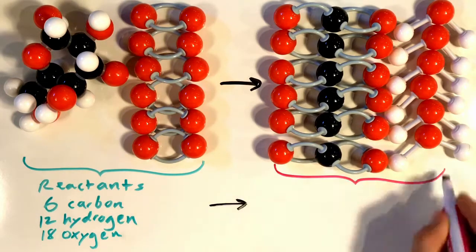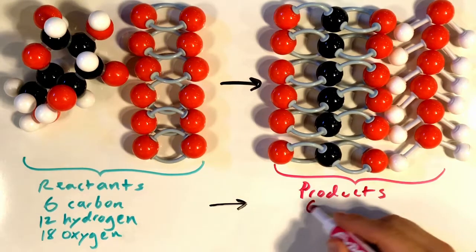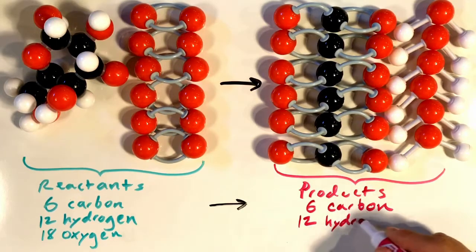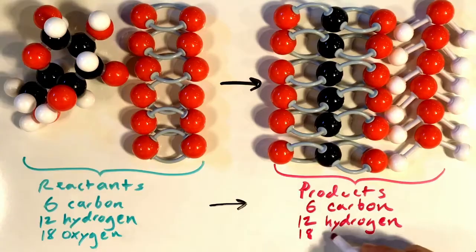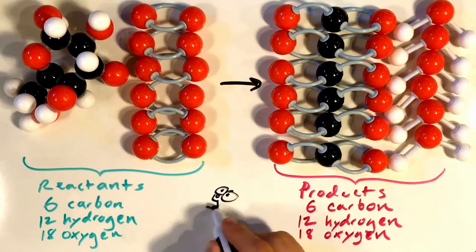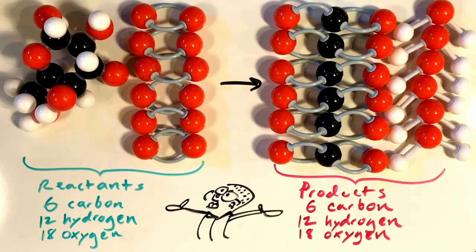While over here in the products side, we currently have 6 carbons, 12 hydrogens, and 18 oxygens. This means that we have successfully balanced our reaction. We know this because the number of atoms of each element in the reactants is now equal to the number of atoms of each element in the products.